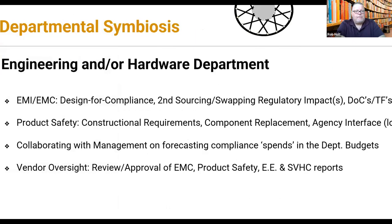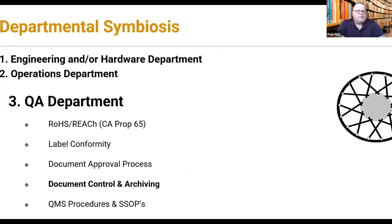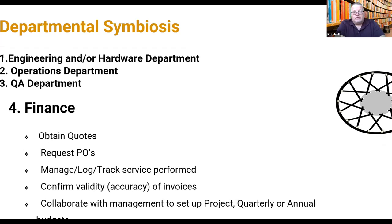Engineering also handles working with management on forecasting compliance spends for a project or annual budget, and vendor oversight. Many companies buy things like AC adapters and you need to look over that vendor's shoulders to make sure regulatory compliance documentation is accurate. Operations has requirements that are post-launch, like reuse and recycle — what we call WEEE in Europe, but other regions call it e-waste. You also have engineering change order approval processes that the regulatory compliance person gets pulled into, to advise on the regulatory consequences of swapping parts.